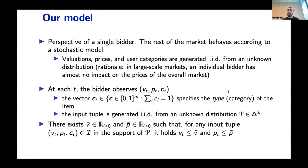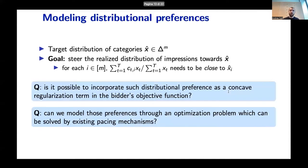This tuple is generated i.i.d. from an unknown distribution P over the set of all possible input tuples. We assume without loss of generality that prices and valuations are upper bounded by some constants bar v and bar p. The goal that we want to reach is the following: we are given a target distribution of categories X hat and we want to steer the realized distribution of impressions towards the target distribution.